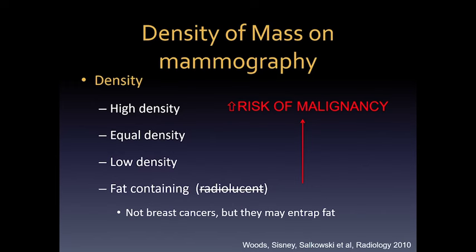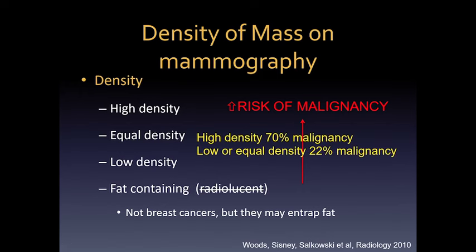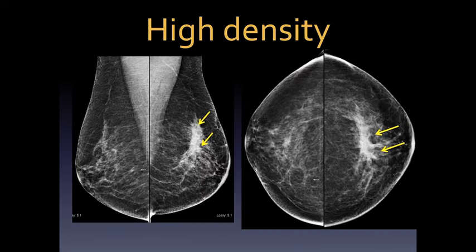The next feature of a mass to look for is density. The most worrisome feature is high density — that is, more white, possibly the most dense part of the breast on the mammogram. As you go down in risk: isodense or equal density, then low density. Fat-containing lesions are typically not associated with malignancy, but be careful because some breast cancers may entrap fat. A study by Woods et al. in Radiology showed that lesions with high density had a 70% risk of malignancy, whereas those of low or equal density had a much lower risk of 22%.